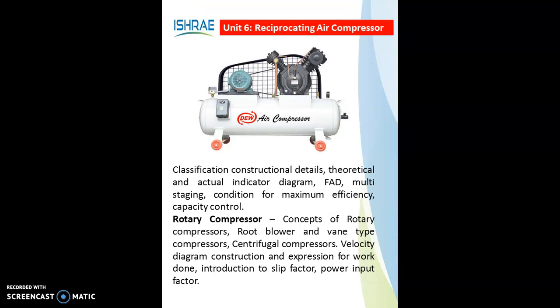Unit 6 is reciprocating air compressor. Air compressors are used in industrial, commercial, and domestic applications. It includes classification, construction details, theoretical and actual indicator diagrams, free air delivered, multistaging concept (used to produce high pressure), condition for maximum efficiency, and capacity control. The second half covers rotary compressors, including the concept of rotary compressors, roots blower and vane type compressors, centrifugal compressor, velocity diagrams, expression for work done (Euler equation), slip factor, and power input factor.